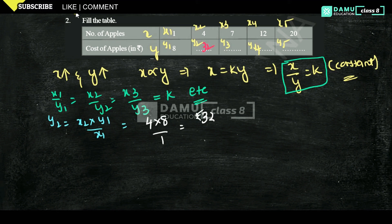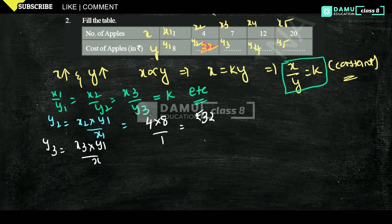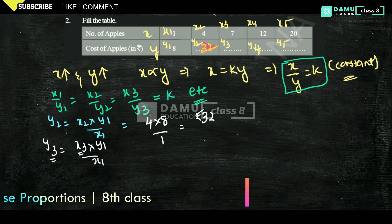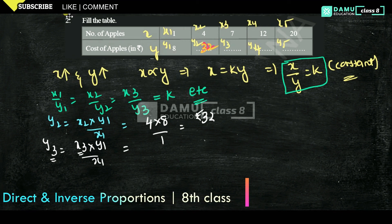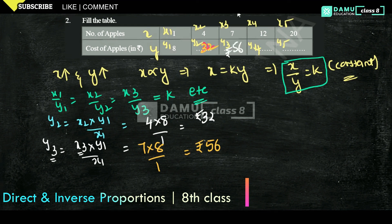Next, let's find y3. y3 = x3 times y1 by x1. This is the same formula for direct proportion. Here x3 = 7, so y3 = 7 times 8 by 1 = 56 rupees.